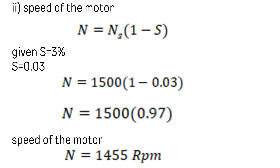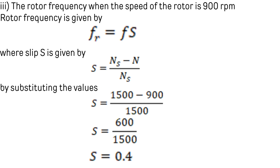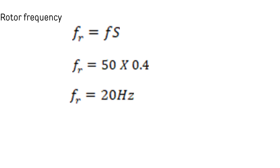For the last part, we find the rotor frequency at a rotor speed of 900 rpm. The formula for rotor frequency is fr = f × s, where slip s = (Ns - N) / Ns. Substituting: s = (1500 - 900) / 1500 = 0.4. Therefore, rotor frequency fr = 50 × 0.4 = 20 Hz.